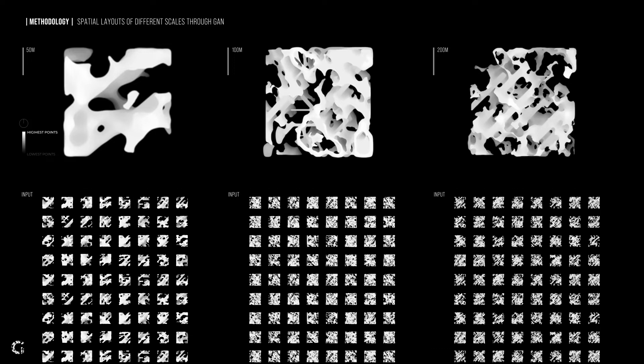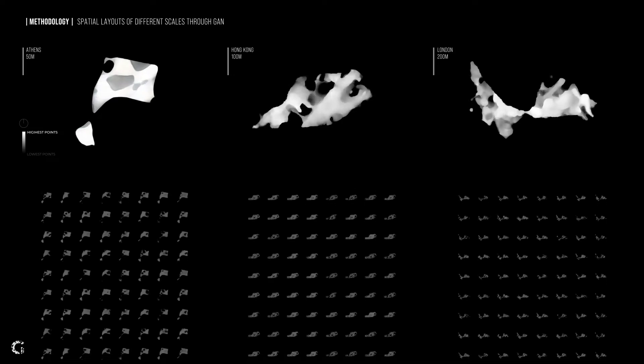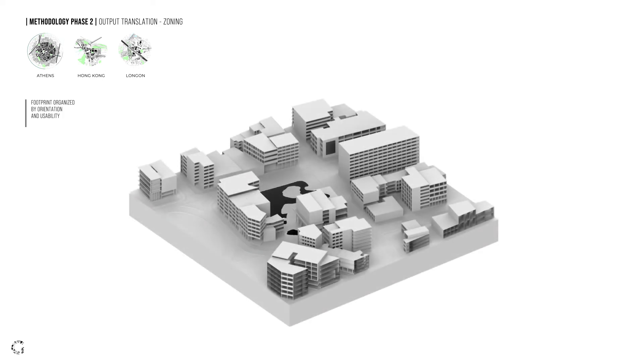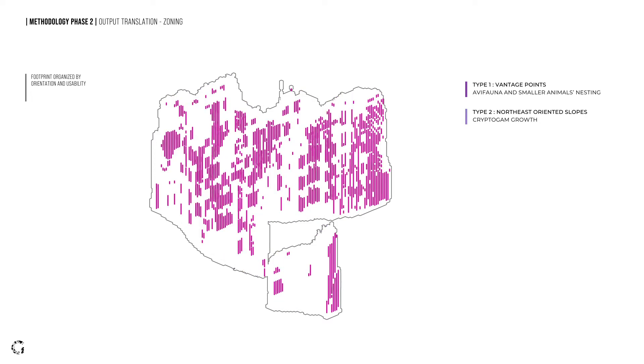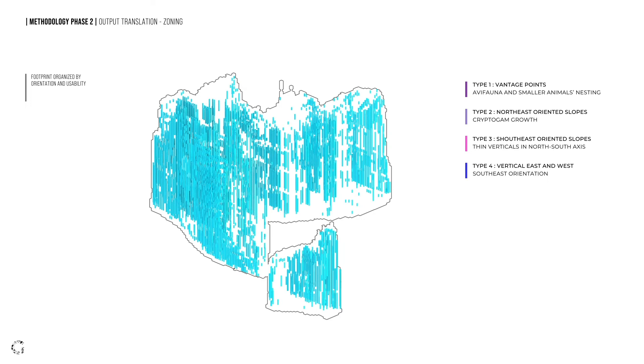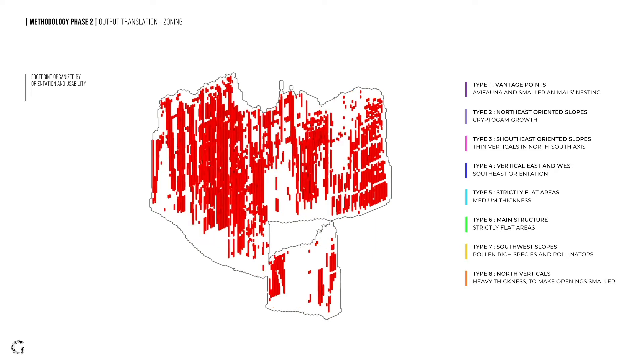The previous approach of applying complex ecological information is applied on three new spatial layouts with scales of 50 meters, 100 meters, and 200 meters respectively. The datasets created inform three new GAN models. We then follow the process of applying site-specific data that influences the GAN and makes it environmentally specific to that locale. The footprint is extrapolated from the map and organized by orientation and usability of the spaces. Each color indicates a different oriented zone on the mass dedicated to a specific function — for instance, yellow indicates the main structure and can accommodate avifauna and other smaller urban animals for nesting.